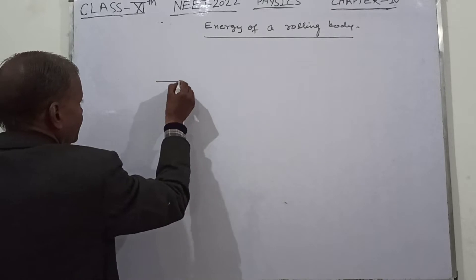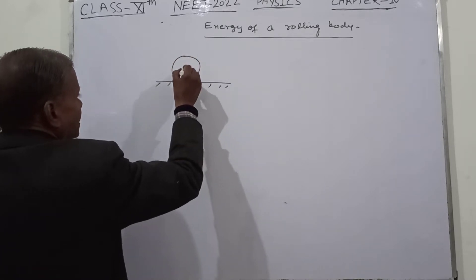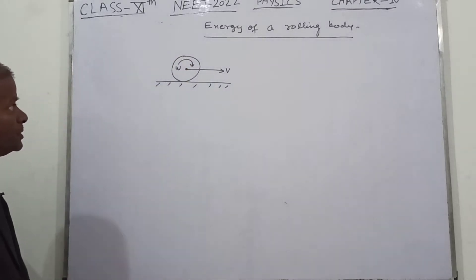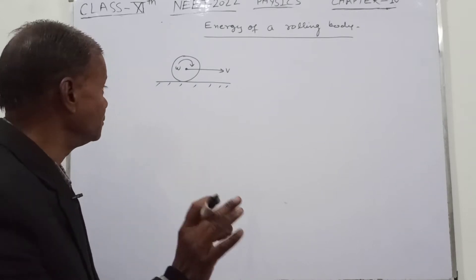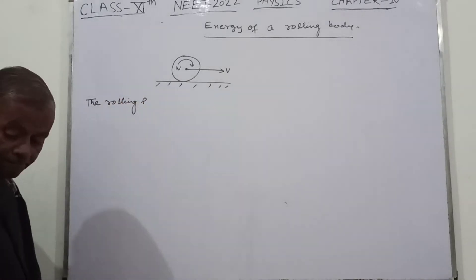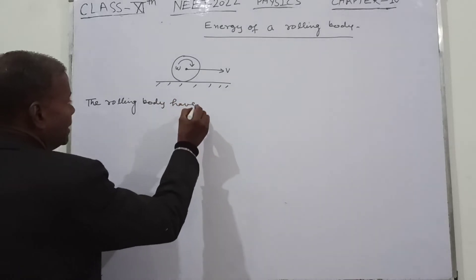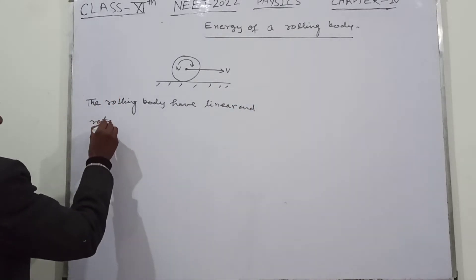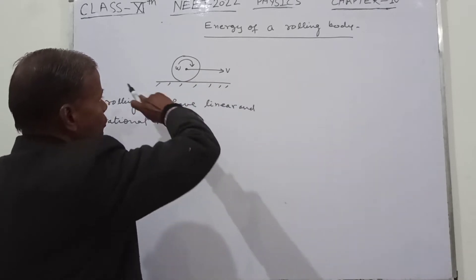Suppose we have a body on a surface. This body moves with velocity v and also rotates with angular velocity. So a rolling body has two motions: the linear motion and the rotational motion.